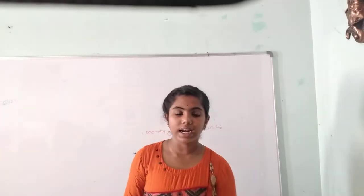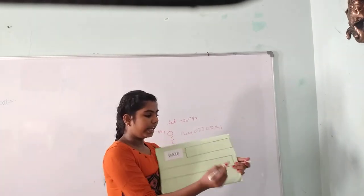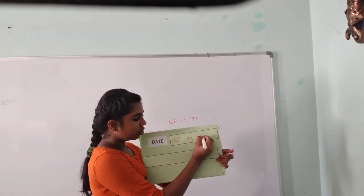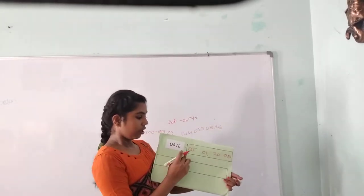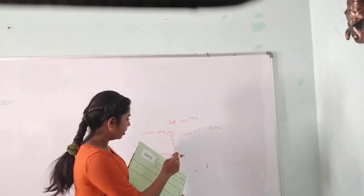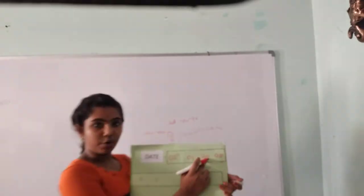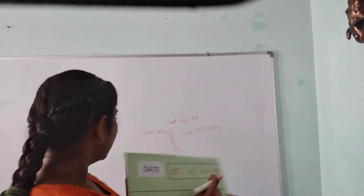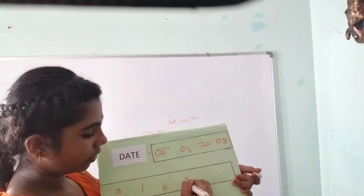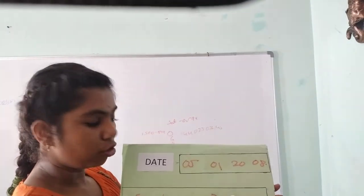To make this easy to understand, I will work through an example. Let's take my date of birth: 5th January 2008. We take the date 5 as it is. January's month code is 1. The 20th century code is 6. We take the last two digits of the year, which is 8. Now we count the number of leap years.